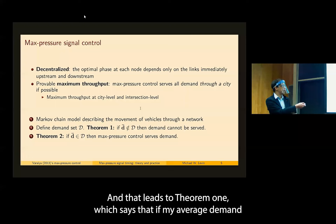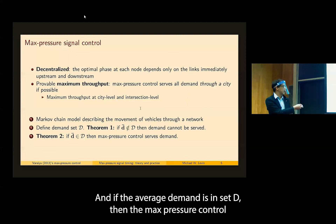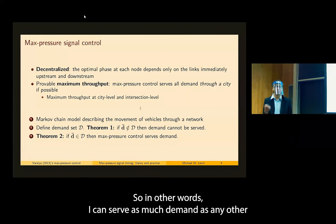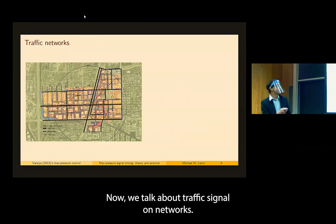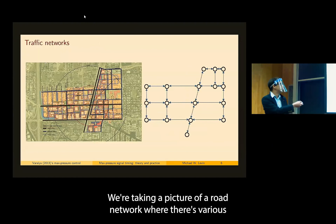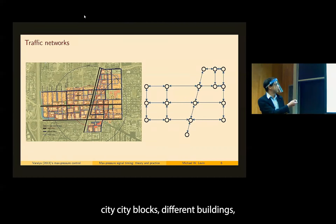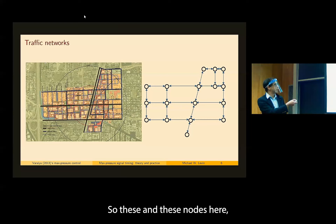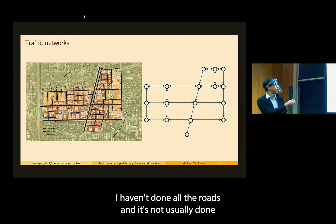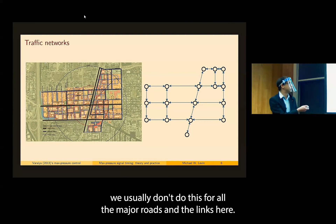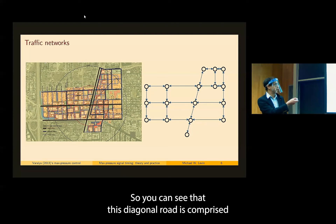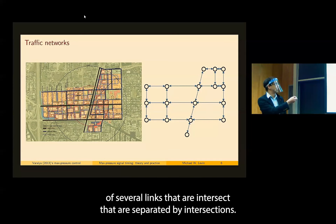Theorem 1 states: if my average demand is not in set D, then I can't serve it; if the average demand is in set D, then the max pressure control will serve that demand. In other words, it can serve as much demand as any other traffic signal control. Here I've illustrated a road network decomposed into nodes representing major intersections and links connecting them. The arrows indicate direction of travel. A diagonal road is comprised of several links separated by intersections.